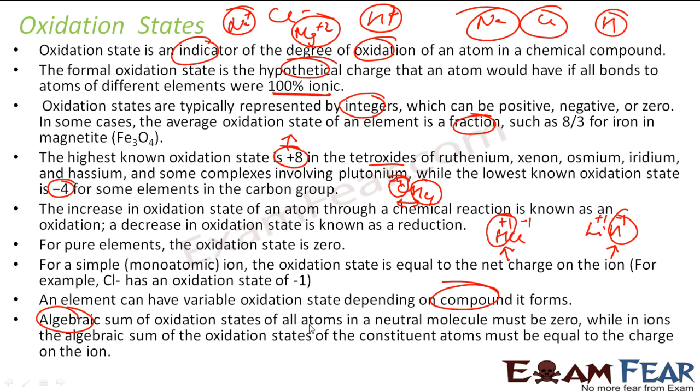The algebraic sum of oxidation states of all atoms in a neutral molecule is 0. For example, HCl, hydrogen oxidation state is plus 1, Cl is minus 1, so it's 0. Lithium hydride, lithium is plus 1, hydrogen is minus 1, you add all, it becomes 0. In case of ions, the algebraic sum of all oxidation states is the charge of the ion. Oxidation state is the hypothetical charge an atom would have if you assume that all the bonds are 100% ionic, which is not true. We assume all are 100% ionic and then give hypothetical charge.